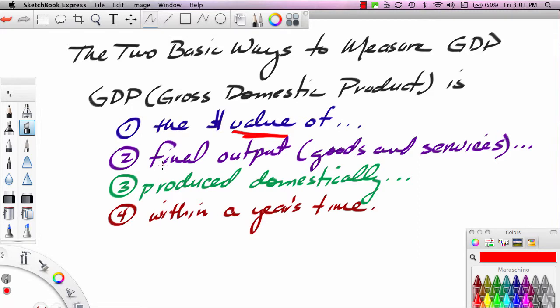Secondly, we want to understand that GDP is a measure of final output. Output can be either goods and or services, goods being tangible products, services being intangible products. But, the point is we're going to estimate the value of final output.